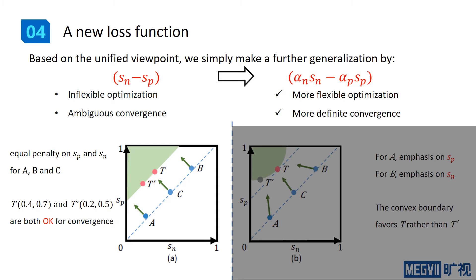Based on such unified interpretation, we make a very simple generalization and get a new loss function. We generalize s_n minus s_p into alpha_n s_n minus alpha_p s_p.